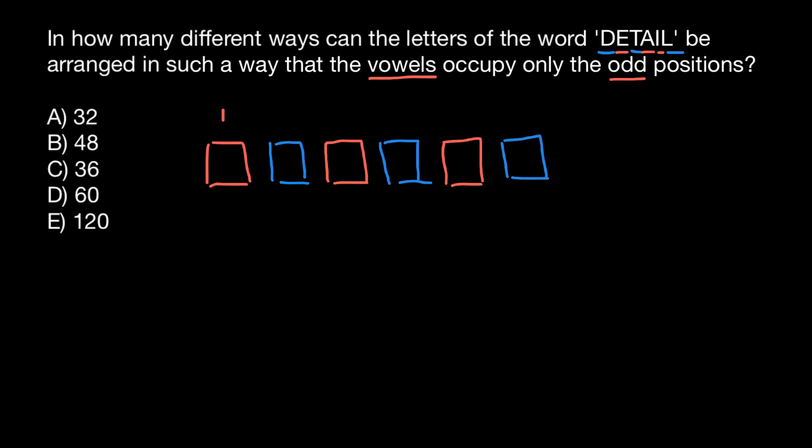So again, first, third, and fifth positions have to be taken by the vowels. And that leaves second, fourth, and sixth positions in a six-letter word for the consonants. Now let's think how many combinations we can get with three letters, which is E, A, and I. This is going to be our vowels.